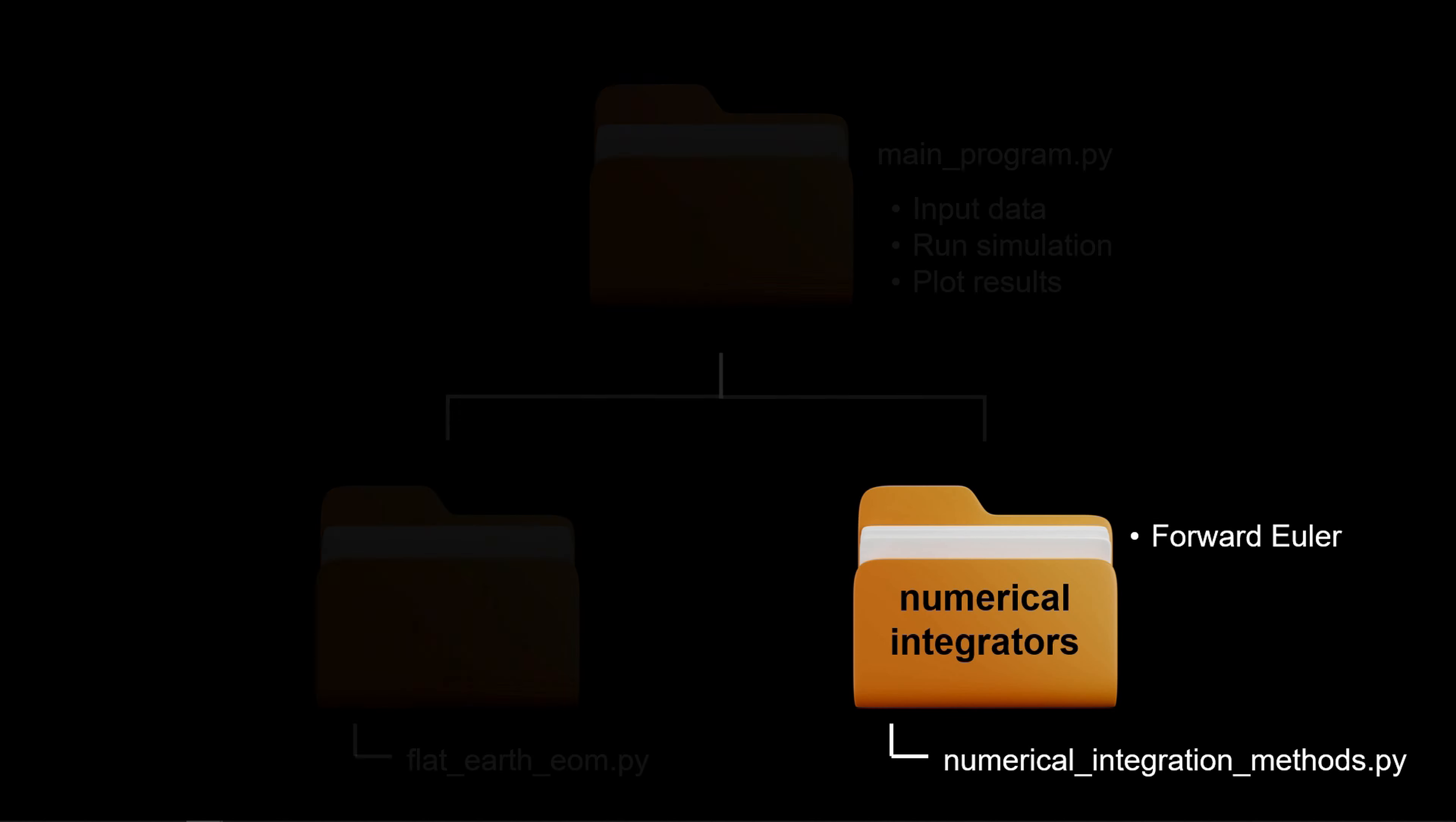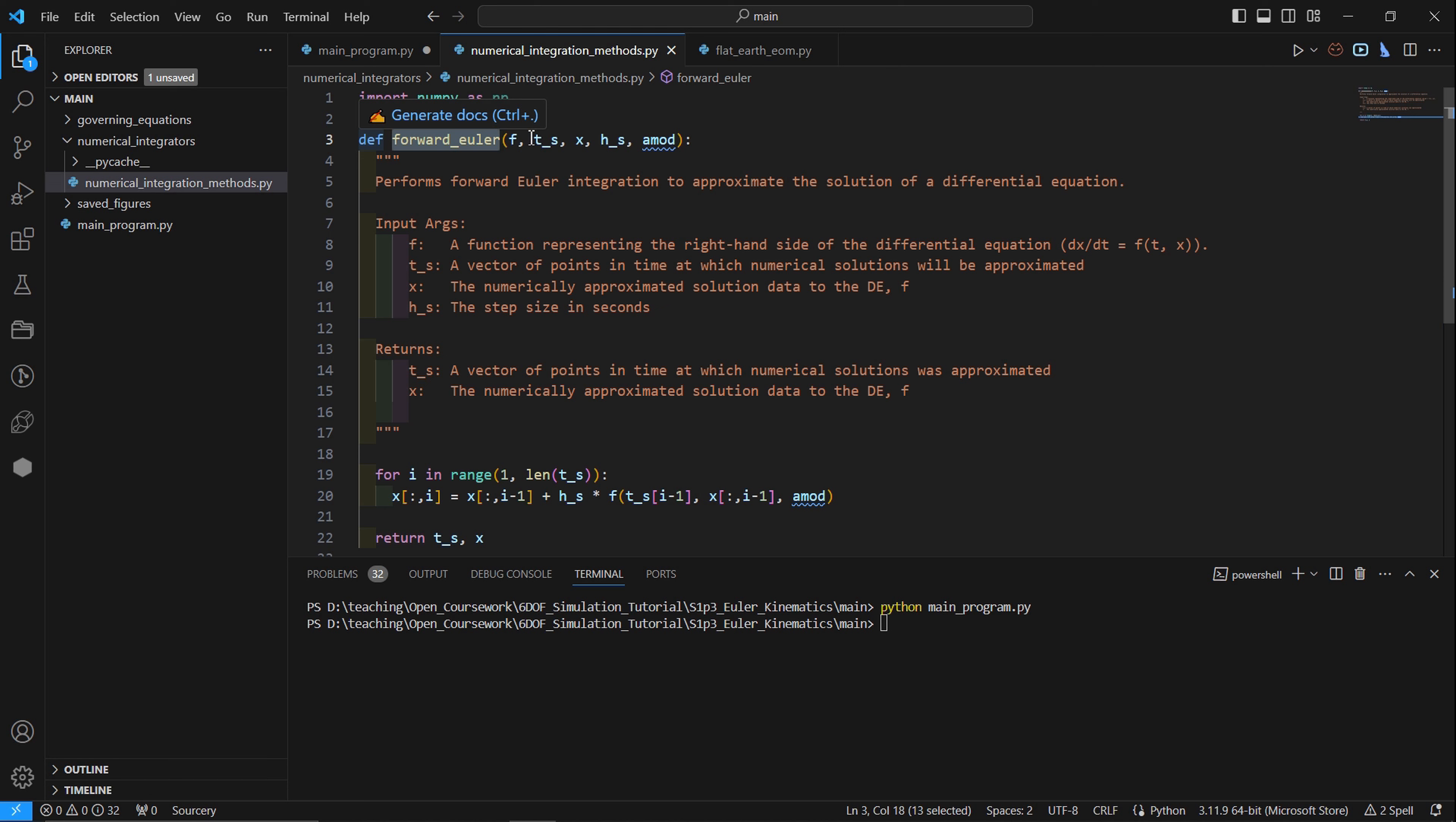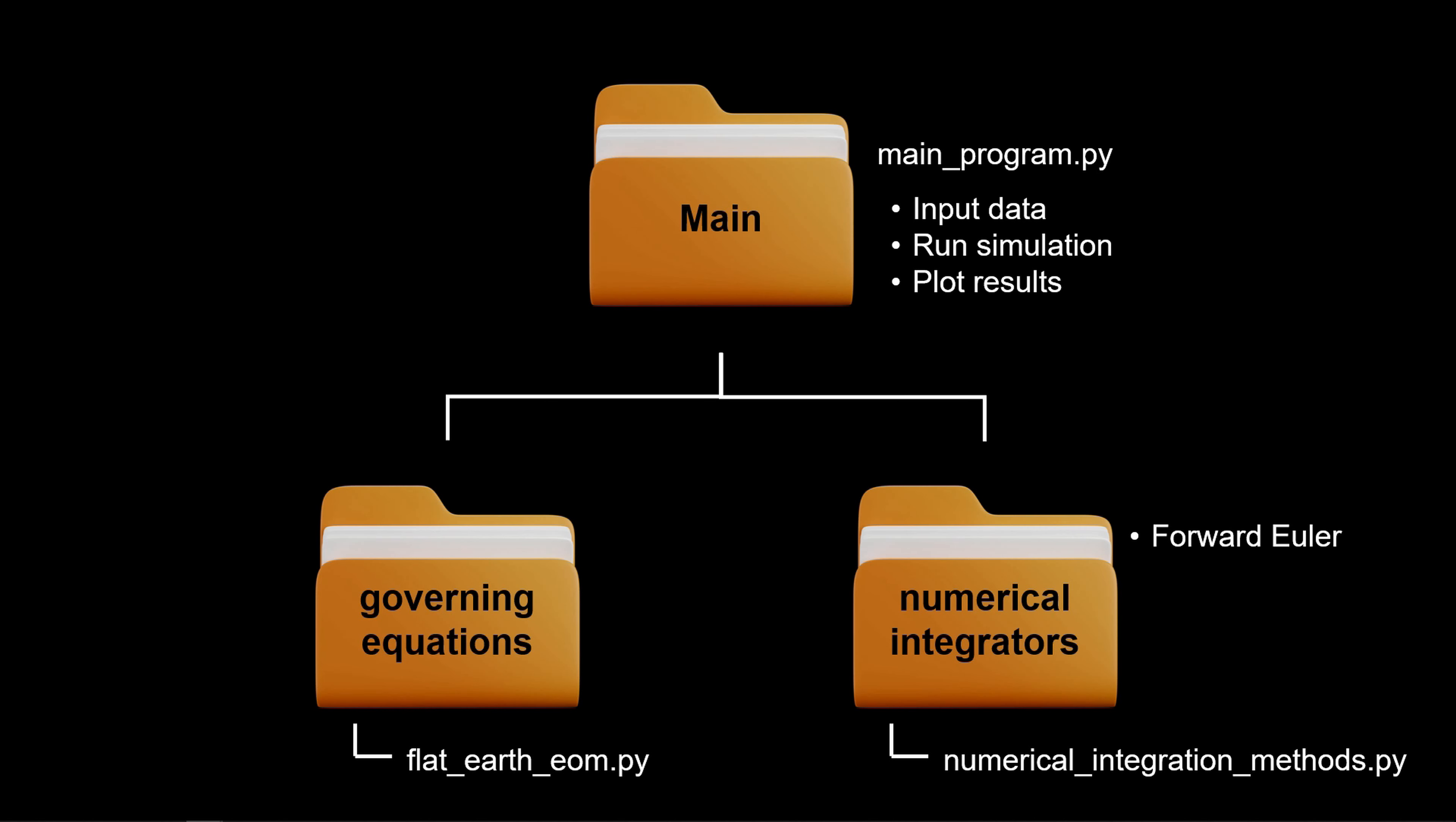Now let's look at the numerical integrator. Here's our forward Euler function. Our input arguments are the function itself, that's the governing equations, the time, the state solution, the time step size, and our vehicle model data. Some upfront comments about what's going on. And then a simple for loop to numerically integrate forward in time.